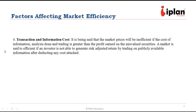Another factor is high transaction and information costs. If transaction and information costs are very high, market efficiency will be reduced. The market will be efficient only to the extent that the cost of information, analysis, and trading is less than the possibility of profit earned from mispriced securities. If publicly available information exists on which trading can be done, but transaction costs are so high that investors do not have sufficient incentive to trade, that brings inefficiency into the market.